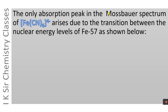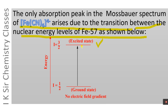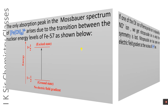The only absorption peak in the Mössbauer spectrum of ferrocyanide ion arises due to the transition between the nuclear energy levels of Fe-57. The excited state of Fe-57 has nuclear spin 3/2, and the ground state has I equals 1/2, in the absence of an electric field gradient. The transition of the nucleus takes place from the ground state to the excited state, giving rise to only one absorption peak.